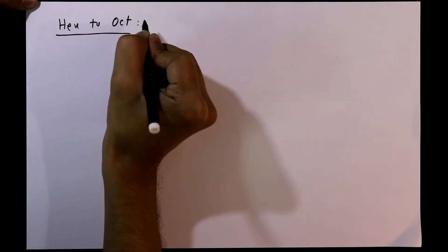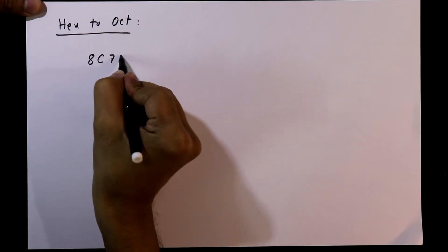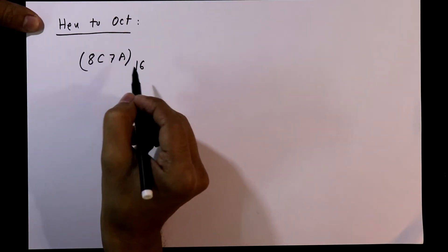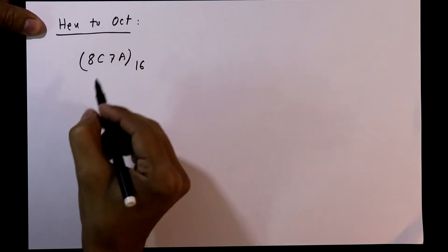Hexadecimal to octal number. Let's say we have to convert this number to octal number. Now write this number in binary in 4-bit, so it is...